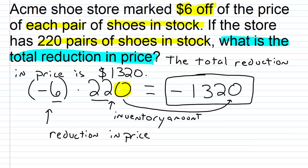To check: the store marks $6 off the price of each pair of shoes in stock — clearly represented as negative 6 — and the store has 220 pairs of shoes in stock. To get the total reduction, we multiply the reduction for each pair of shoes times the total number of pairs of shoes. Negative 6 times 220 is negative 1,320, so that's our total reduction in price.